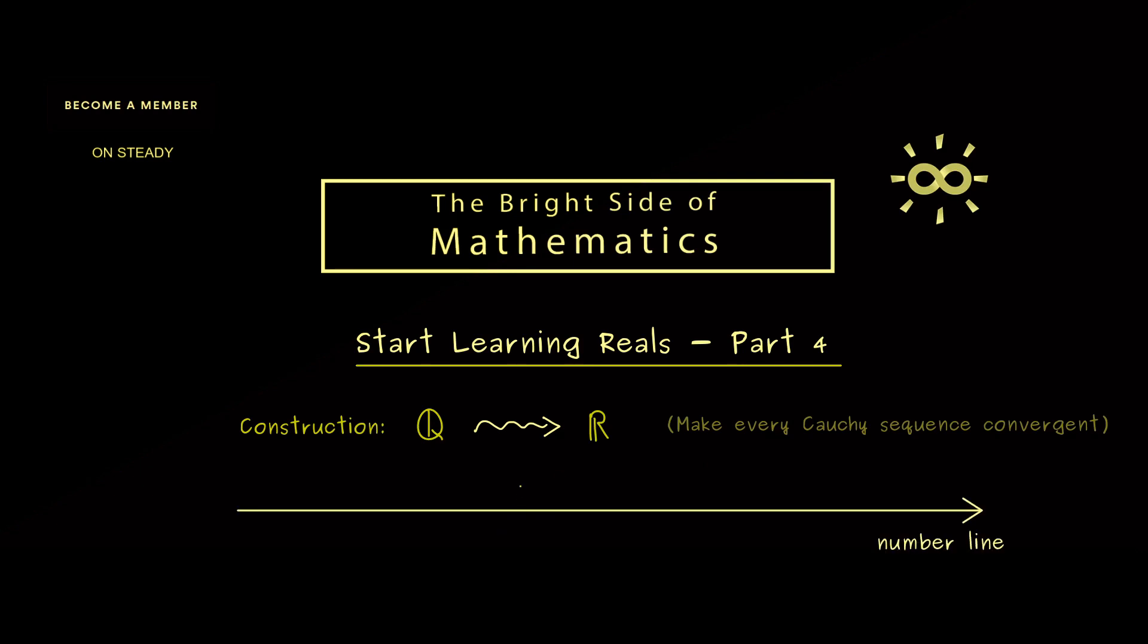Our idea in this case should be that each point on the number line can be represented by a Cauchy sequence. For example, for the point 1/3, we can choose the sequence that has the members 1/3, 1/3, and so on. So it's simply a constant sequence, therefore in particular a Cauchy sequence and also a convergent sequence. However, the important part is that the limit is our point 1/3.